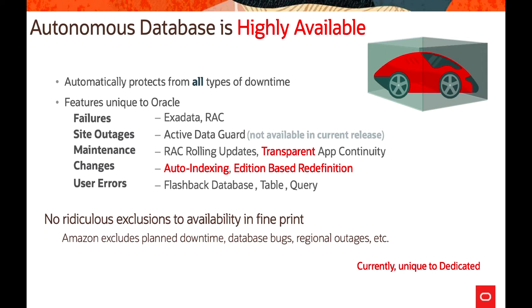For site outages it uses Active Data Guard, which is coming soon and not available in the current release. For maintenance-related activities, Real Application Cluster rolling updates and Transparent Application Continuity help manage changes. Online indexing and edition-based redefinition are all online operations. For any user errors, Flashback Database and Flashback Table or Flashback Queries are available.